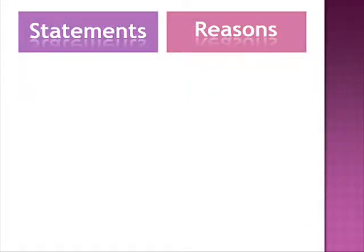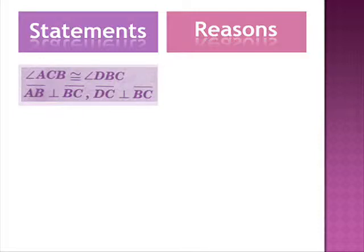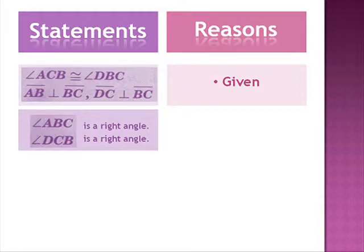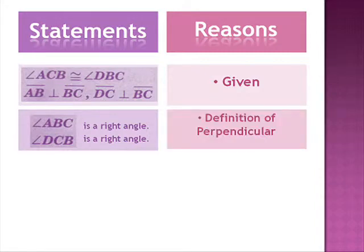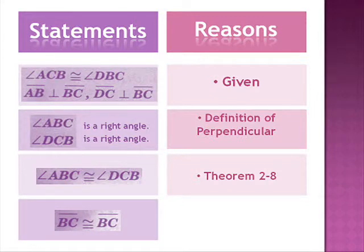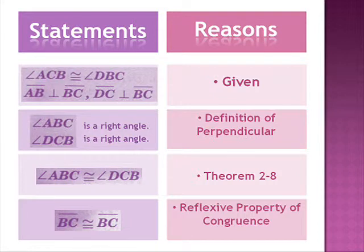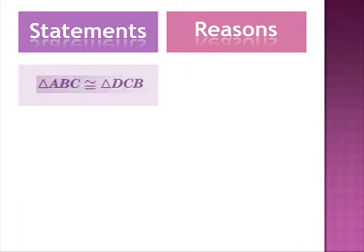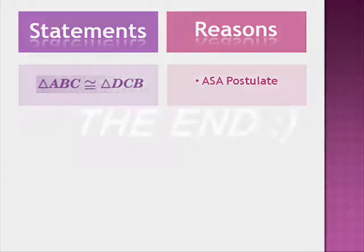Here is the two-column proof for this example. Using the given, angle ABC is a right angle and angle DCB is a right angle by the definition of perpendicular lines. Angle ABC is congruent to angle DCB by Theorem 2-8. Line segment BC is congruent to line segment BC by the reflexive property of congruence. Therefore, triangle ABC is congruent to triangle DCB by the ASA postulate.